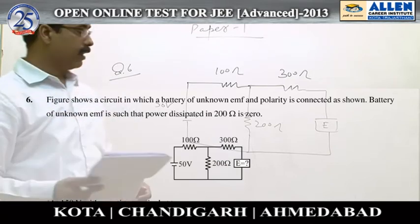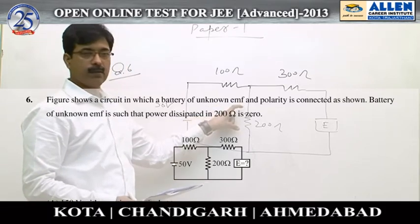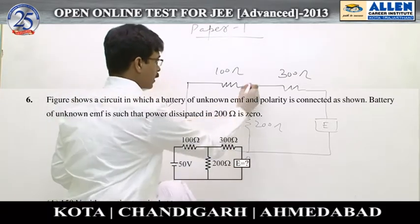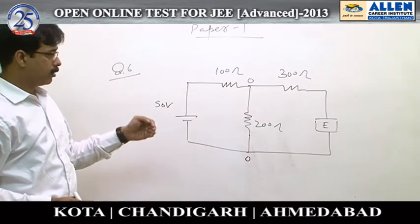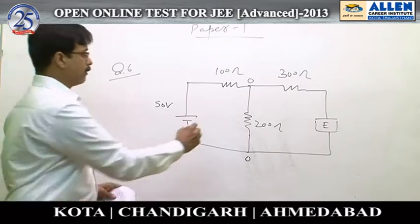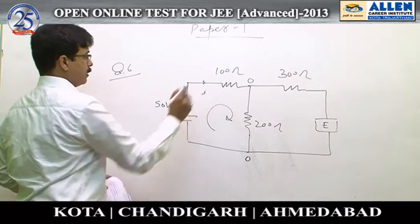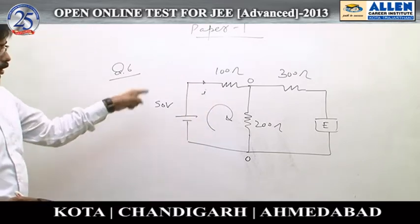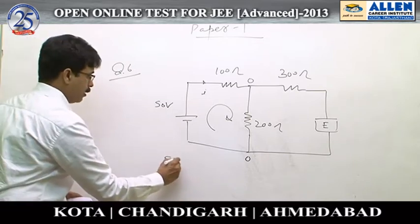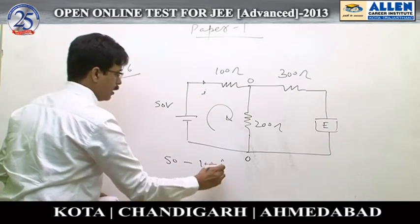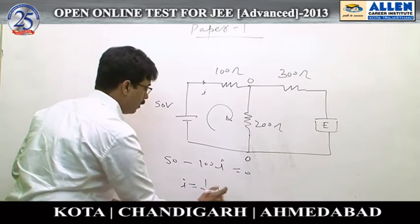Question number 6. In this question we have been given that the potential difference across the 200 ohm resistor is 0, meaning the potential at these two points is the same. Applying Kirchhoff's voltage law to the first loop traversing in this direction, with current I flowing: 50 minus 100I equals 0, hence current I is 1/2 ampere.